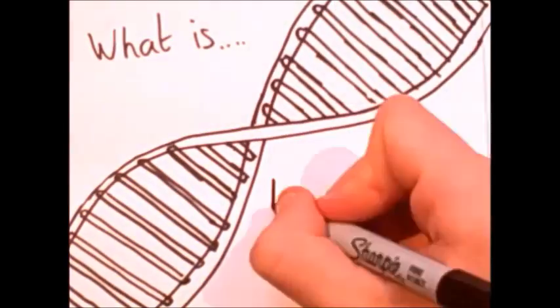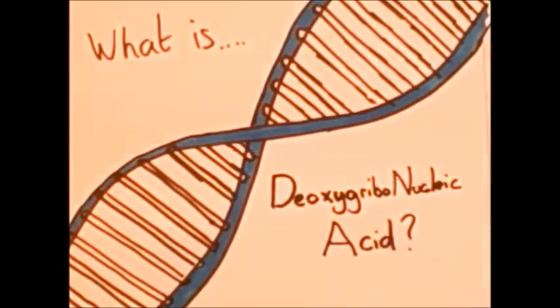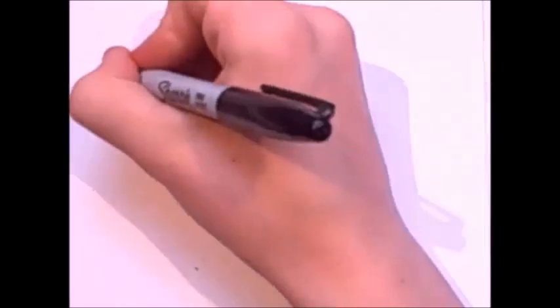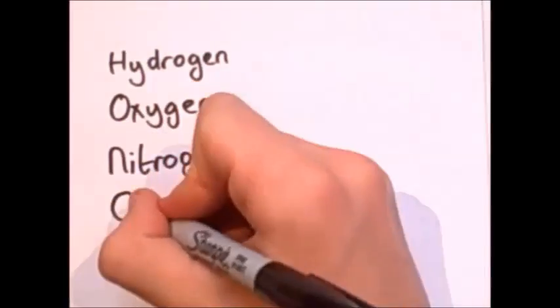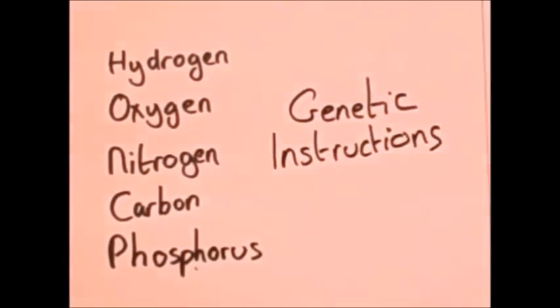What is deoxyribonucleic acid? DNA is made up of hydrogen, oxygen, nitrogen, carbon and phosphorus, and has genetic instructions.